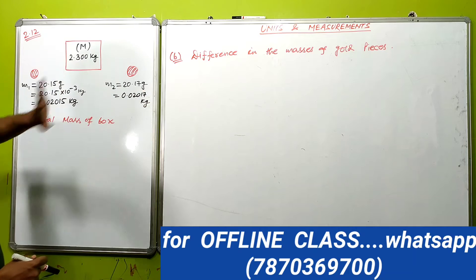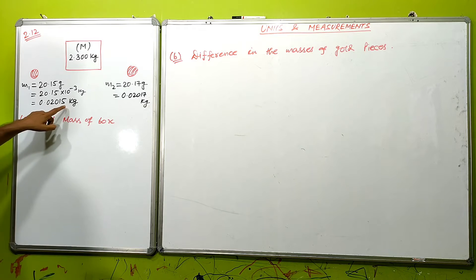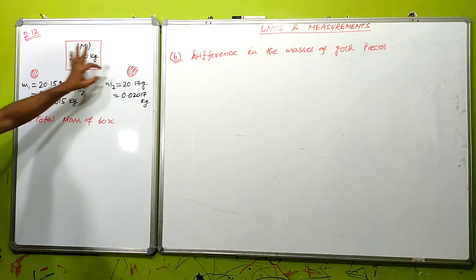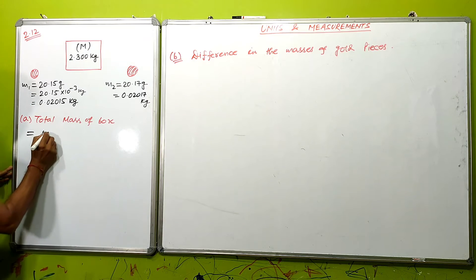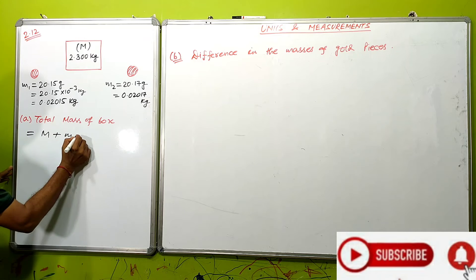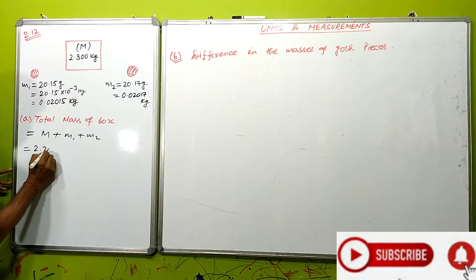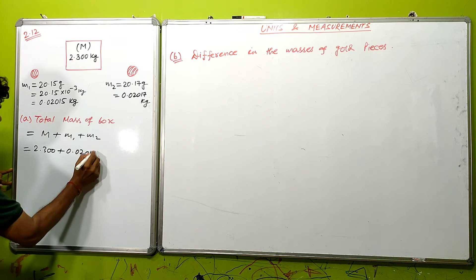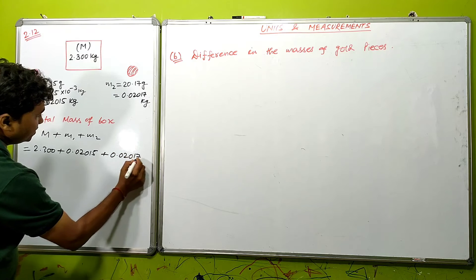We can convert the masses to kg: 20.15 g becomes 0.02015 kg and 20.17 g becomes 0.02017 kg. For Part A, we add the mass of the box plus the first gold piece plus the second gold piece: 2.300 kg + 0.02015 kg + 0.02017 kg.